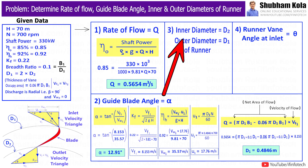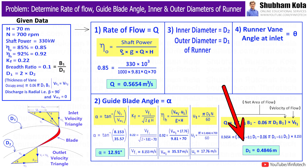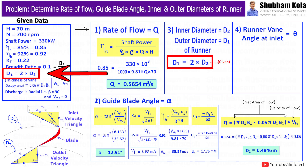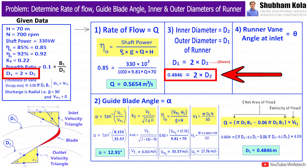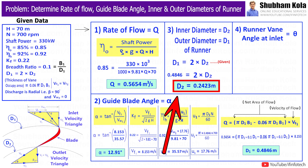Next we calculate inner diameter d2 and outer diameter d1 of the runner. We already found outer diameter d1 = 0.4846 m. Since d1 = 2 × d2, the inner diameter d2 = 0.2423 m.